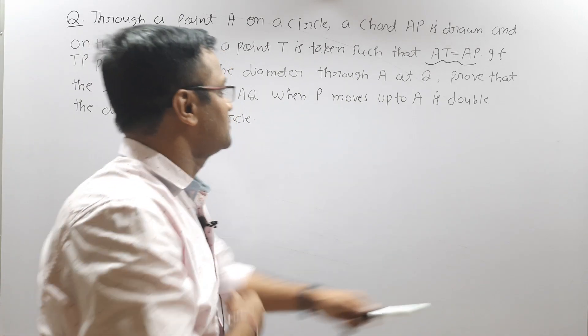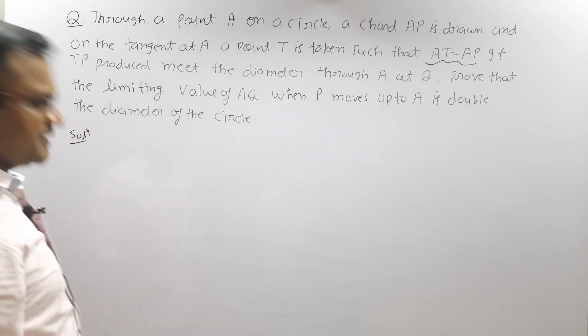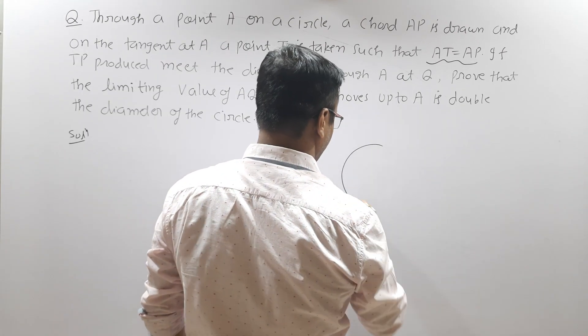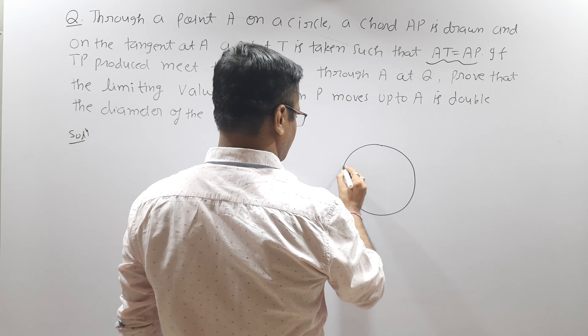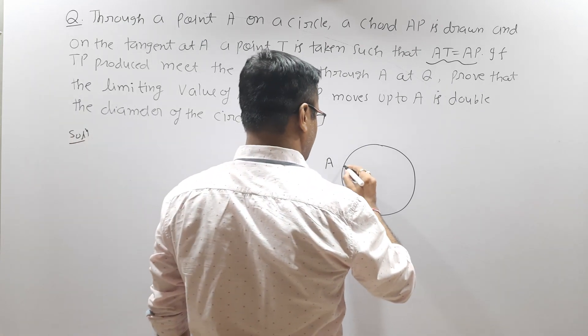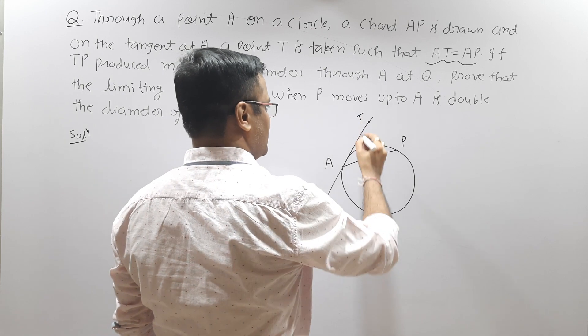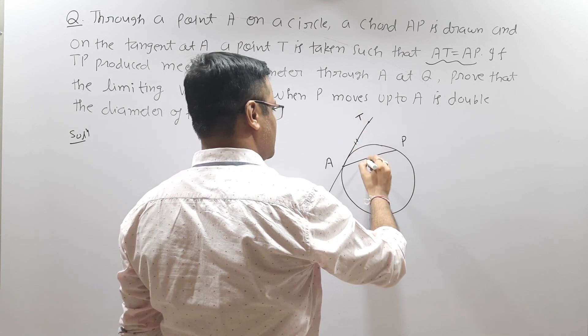So first of all, I am going to draw the diagram. Point A lies on a circle — let's place point A somewhere here. And chord AP is drawn. On the tangent at A, a point T is taken such that AT equals AP. So this is the tangent at point A, here is point T, and AT and AP both have the same length.